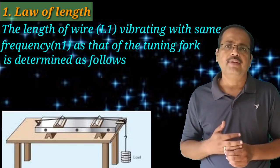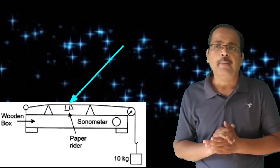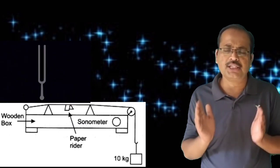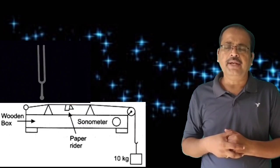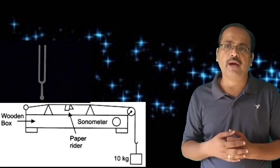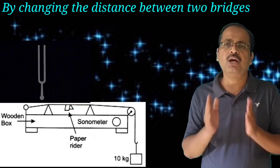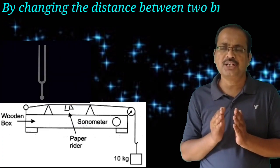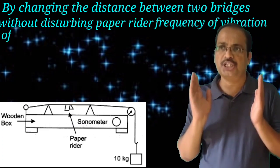For the frequency N1, the length of vibrating string L1 can be calculated as follows. First of all, a light paper rider is placed on the wire, midway between two wooden bridges. Then a vibrating tuning fork is placed on the sonometer. The wire begins vibrating, and by changing the distance between two bridges without disturbing the paper rider, the frequency of vibration of the wire is changed.